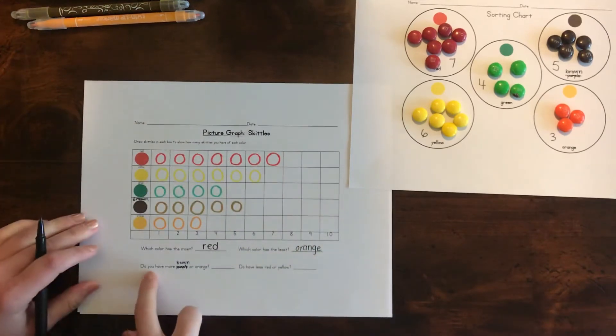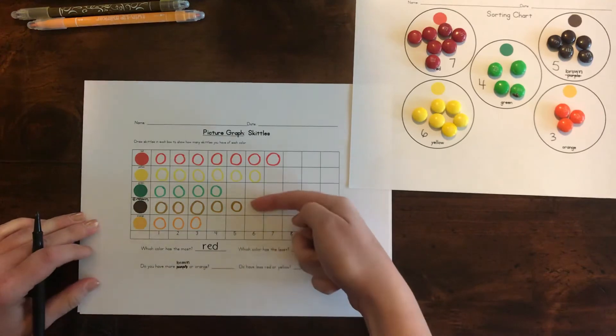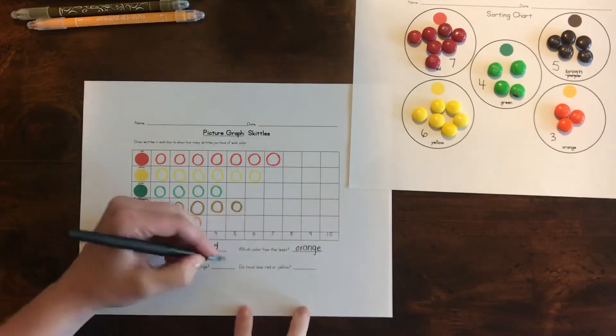Then which color has the least? So that's the smallest. I think that's orange. Then this one says, do you have more brown or orange? So are there more brown or orange? We can quickly tell that we have more brown, right?